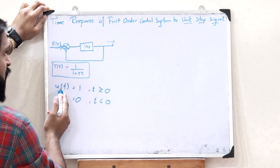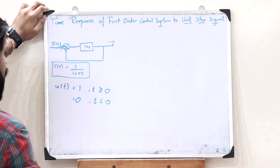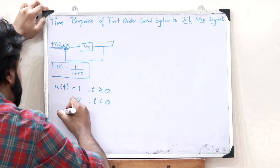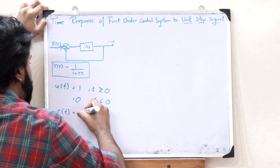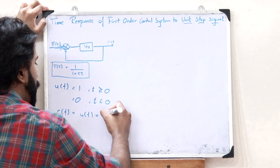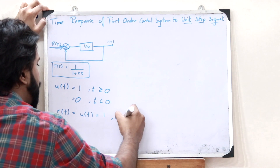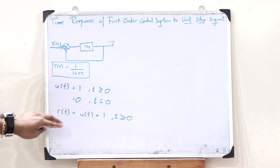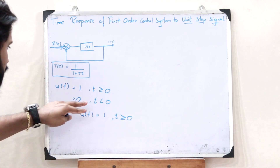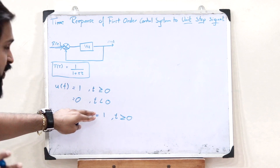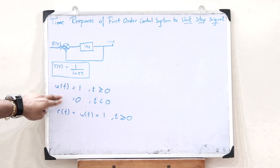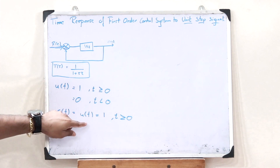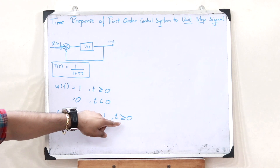Let us apply this unit step signal as the input. Since this is in the time domain, we have r(t) = u(t) = 1 for t ≥ 0. We are not considering the case when t < 0 because for those values, u(t) = 0. So we have r(t) = u(t) = 1 for t ≥ 0.